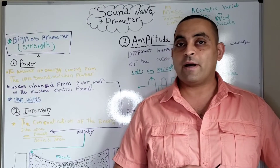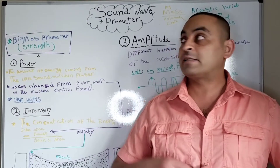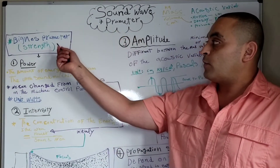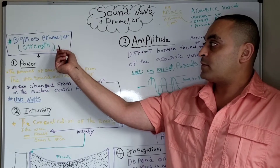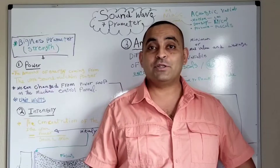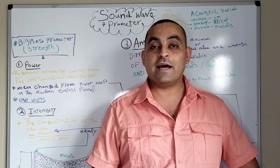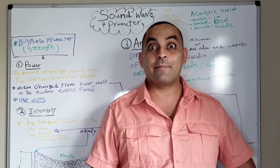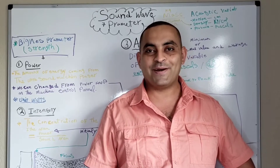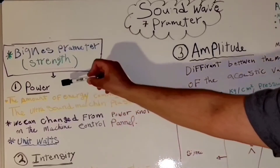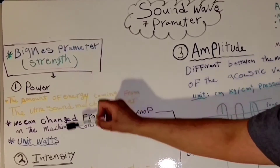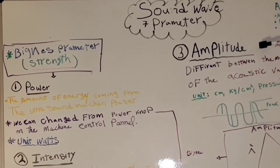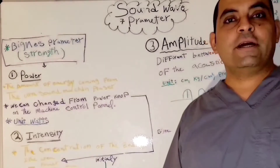In this lecture, we'll talk about the sound wave parameters and we'll focus on the bigness parameters. My name is Joe and I help people understand ultrasound physics and pass the SPI exam. The bigness parameters are the power, the intensity, and the amplitude.